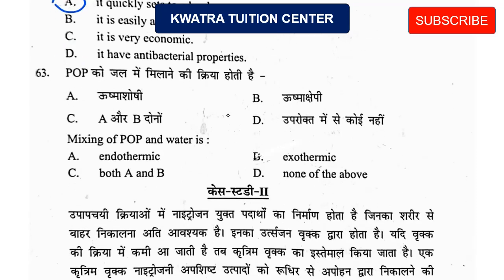Question 63: Mixing of POP and water is which type of process? Options are endothermic, exothermic, both A and B, or none. When POP is mixed with water, it gives out heat. So this process is exothermic — that is the correct answer.